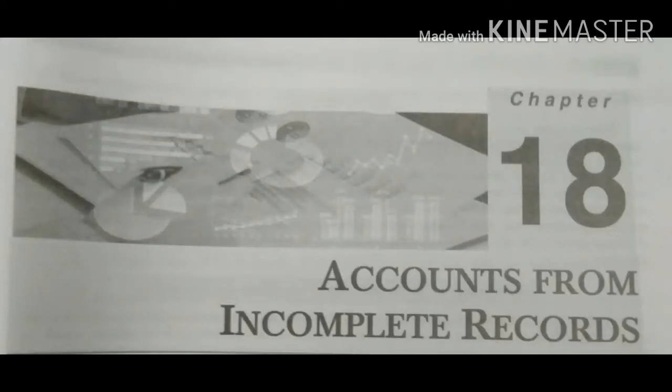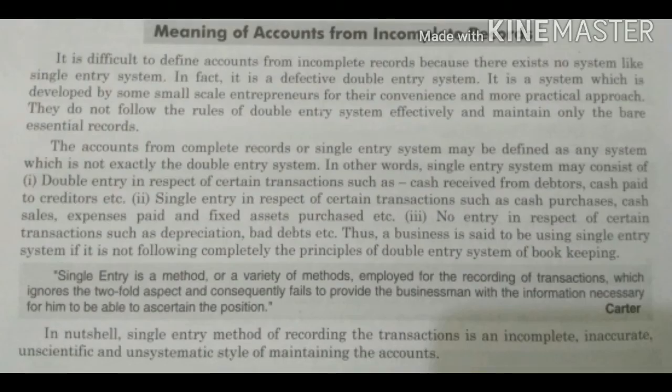Today we are going to start with Chapter 18: Accounts from Incomplete Records. The very first topic is the meaning of accounts from incomplete records. It is difficult to define because there exists no system like single entry system — in fact, it is a defective double entry system developed by small-scale entrepreneurs for convenience, who do not follow the rules of double entry system effectively and maintain only the bare essential records.